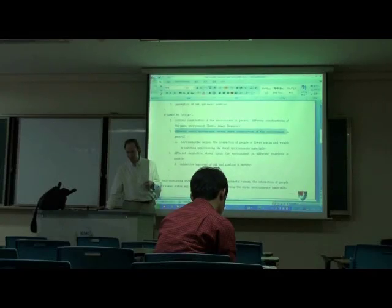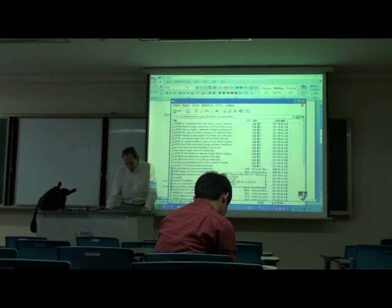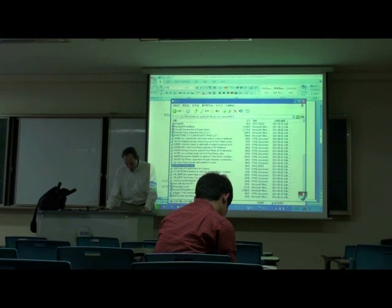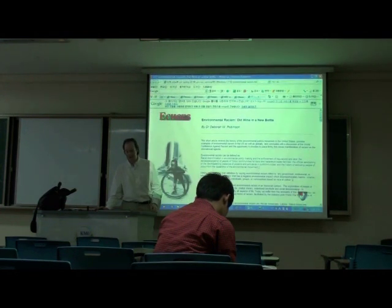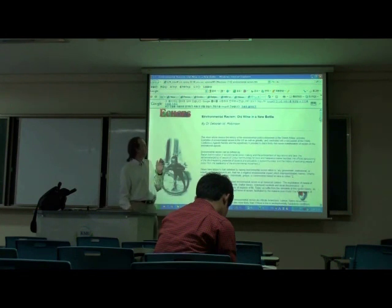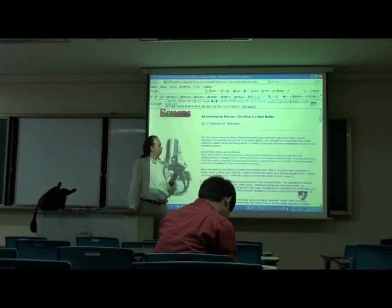And back to this. Let's talk about environmental racism as another example. Here is an example of environmental racism. They say old mind and new model. Environmental racism can be defined as racial discrimination in environmental policy making, the enforcement of regulations and laws deliberately targeting people of color communities for toxic and hazardous waste facilities.